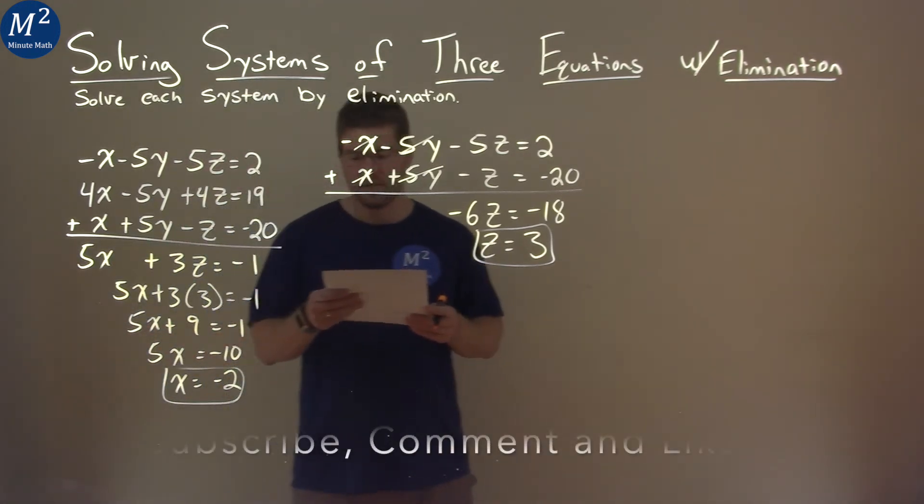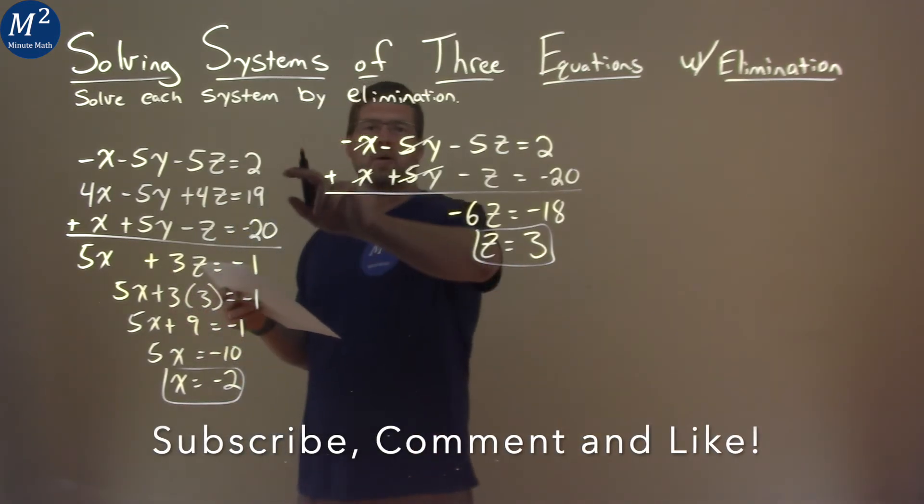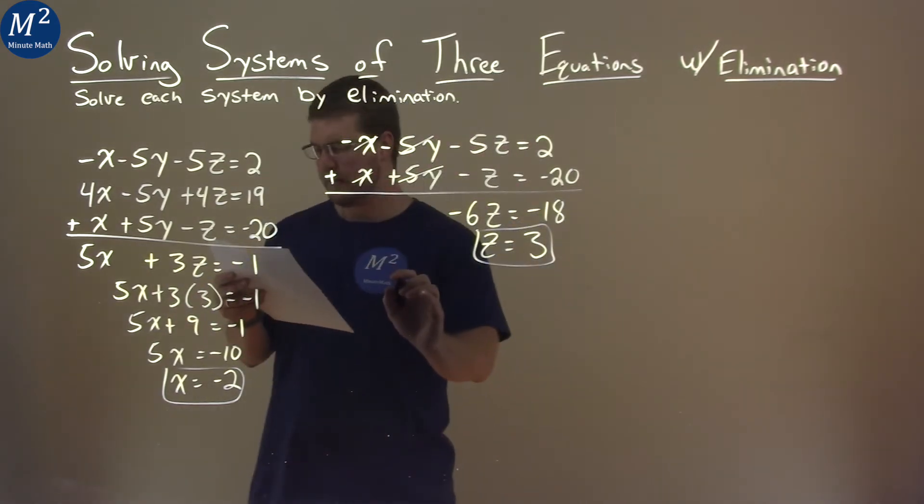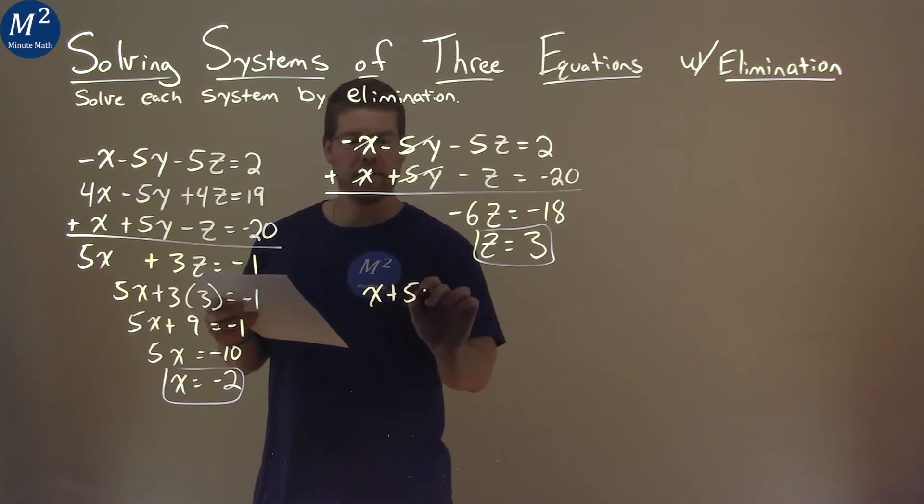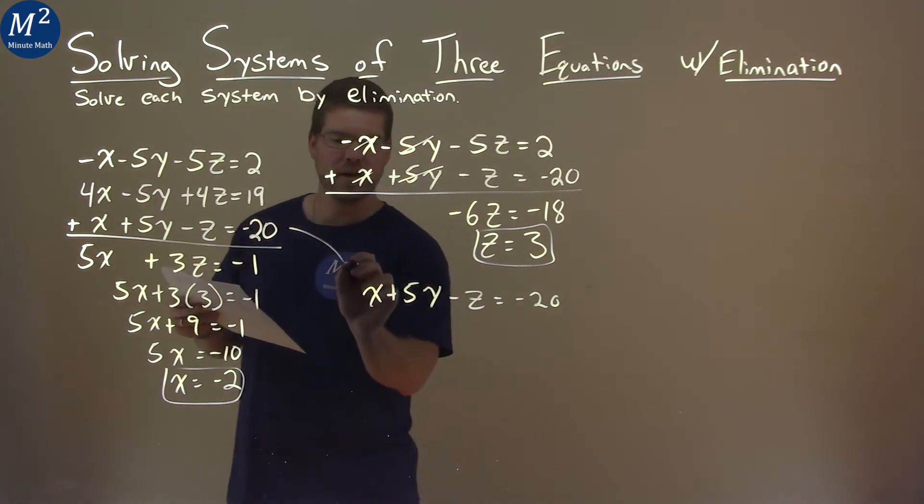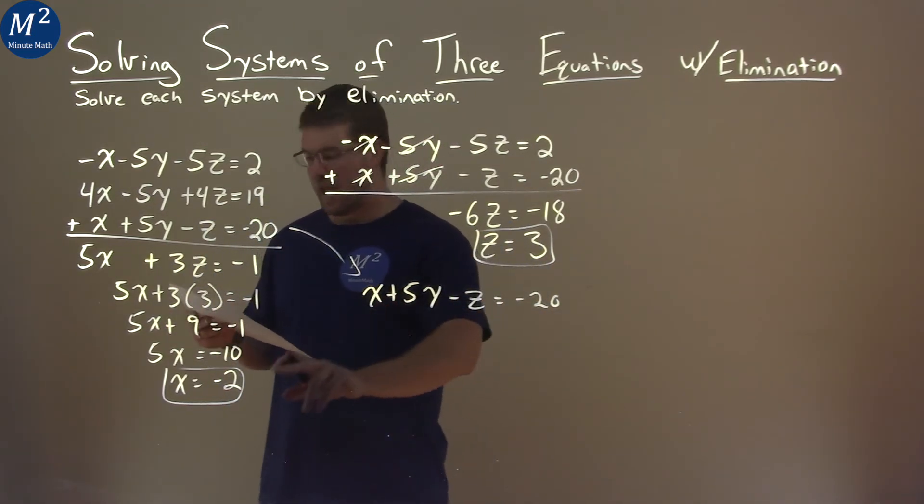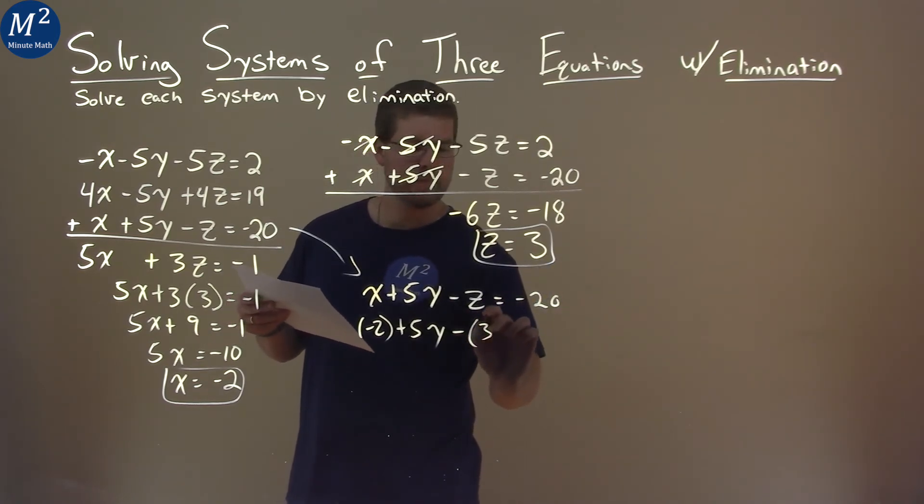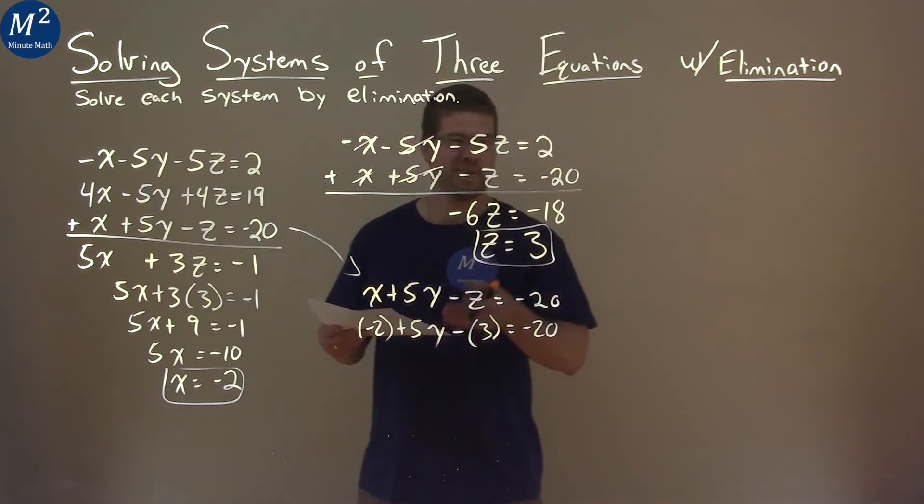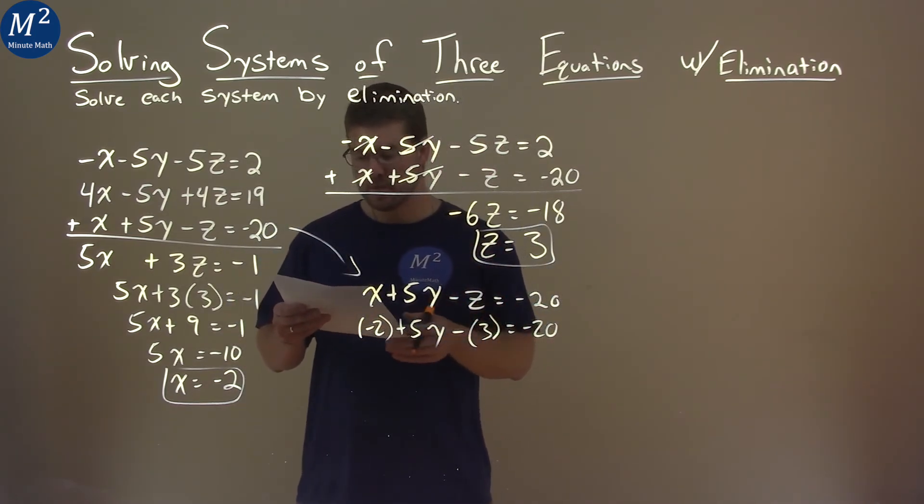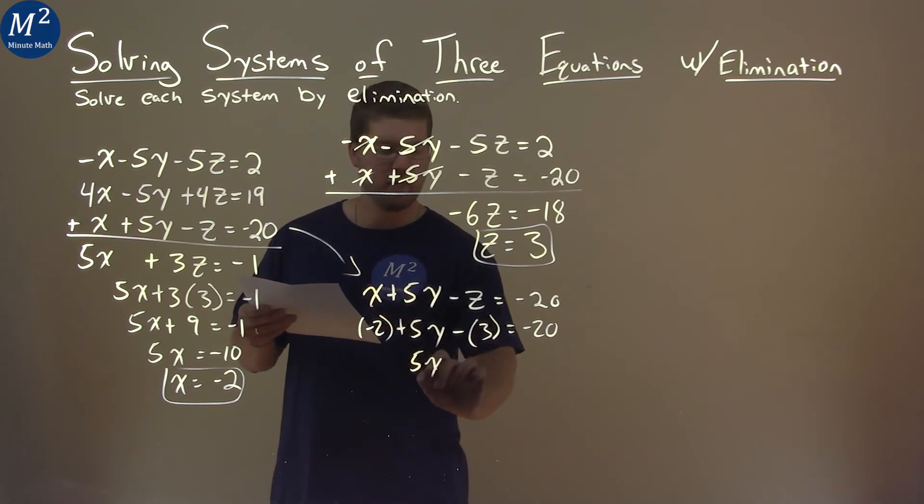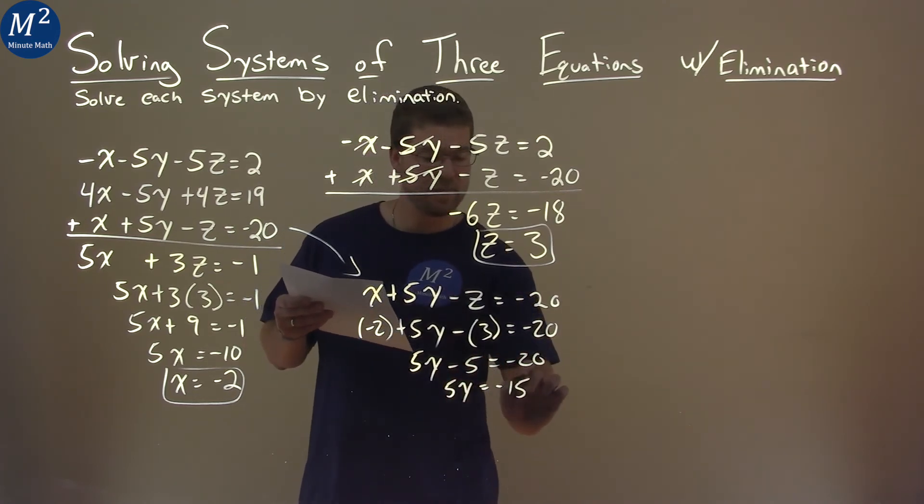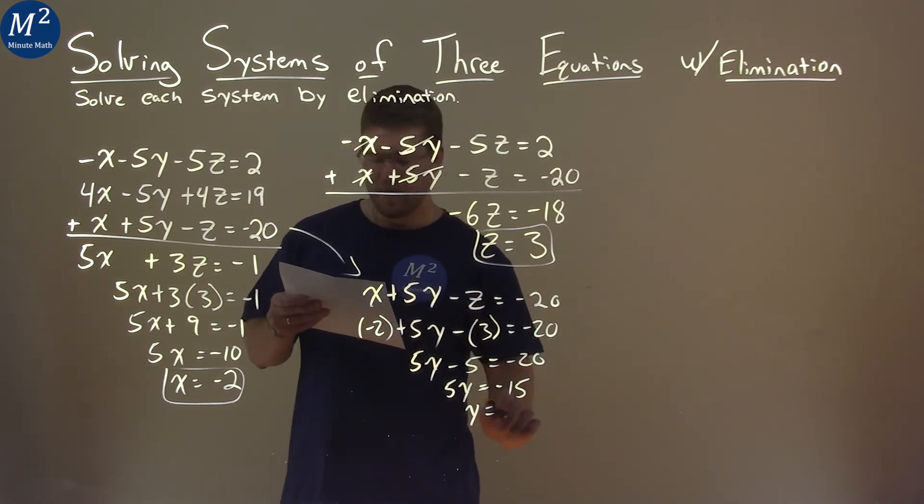So now we have the x value and we have the z value. Let's go find the y value. I can pick any one of my equations here to plug in z and x value, and I think the last one is the easiest. So I'm going to take that equation. We have x plus 5y minus z equals negative 20. Let's plug in the values that we know. x we said was negative 2. We don't know the y value yet, we're going to find that. And then we're minus z being 3, and that's negative 20. And now we have enough information to solve for y. Let's combine the like terms here. So negative 2 plus negative 3 is negative 5. So we have 5y minus 5 equals negative 20. We add 5 to both sides and we have 5y equals negative 15. And divide both sides by 5, y is by itself, and that's negative 3.